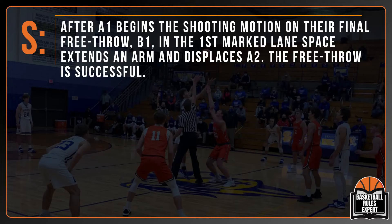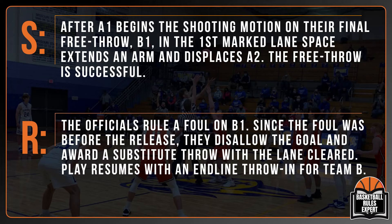Scenario 6: After A1 begins the shooting motion on their final free throw, B1 in the first marked lane space extends an arm and displaces A2. The free throw is successful. The officials rule a foul on B1, disallow the goal since the foul was before the release, and award A a substitute free throw with the lane cleared. Play resumes with an end-line throw-in for Team B. Were the officials correct?